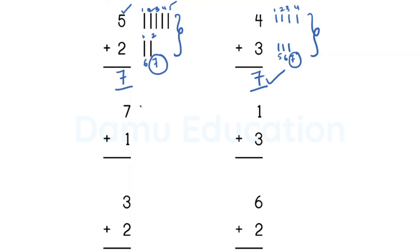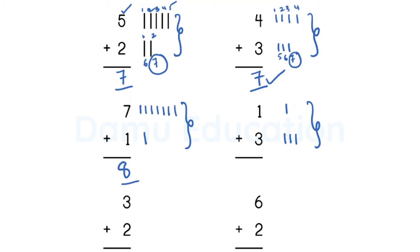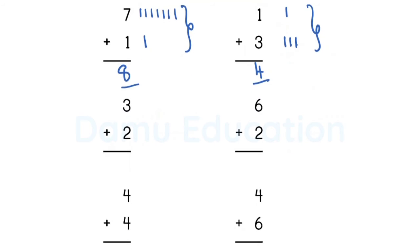For seven plus one: draw seven lines — one through seven — then draw one more line. Count them all: seven, and after seven comes eight, so eight is the answer. For one plus three: one line, then three lines — one, two, three. Combined: one, two, three, four. Final answer is four.